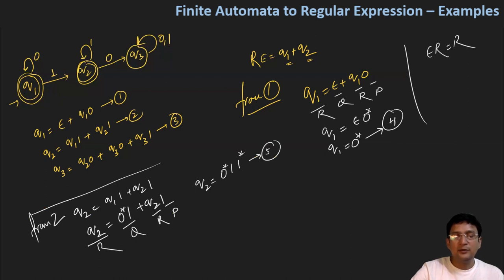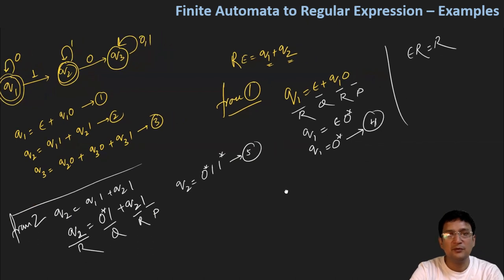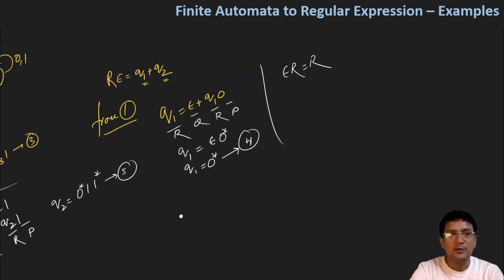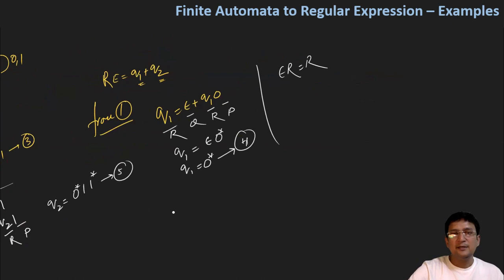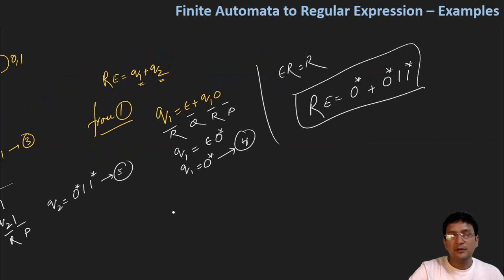We have the solution for Q1 and Q2. Since regular expression equals Q1 plus Q2, the regular expression becomes 0* plus 0*1*1*. This is the regular expression corresponding to the given automata. I hope you must have understood this. We will take more examples in the next lecture.